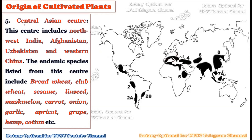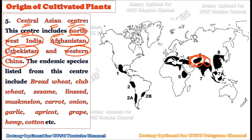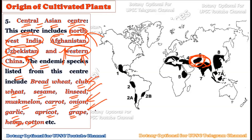The fifth center is the Central Asian center of origin, which includes northwest India, Afghanistan, Uzbekistan, and western China. The endemic species from this region include bread wheat, club wheat, sesame, linseed, muskmelon, carrot, onion, garlic, apricot, grapes, hemp, and cotton. It is important to note that northwest India is included in this Central Asian center, making it significant from the Indian perspective.